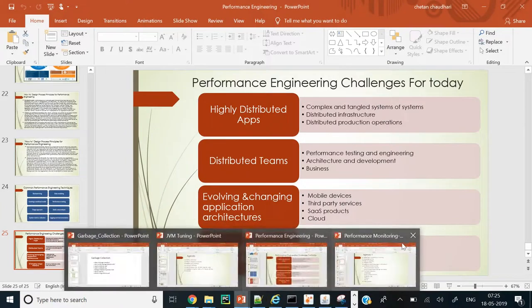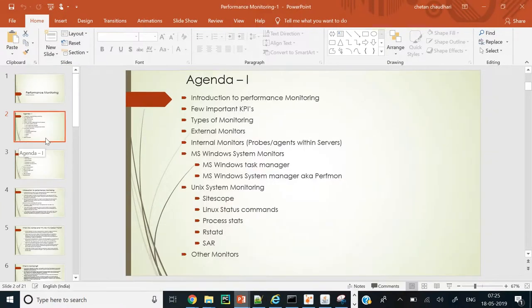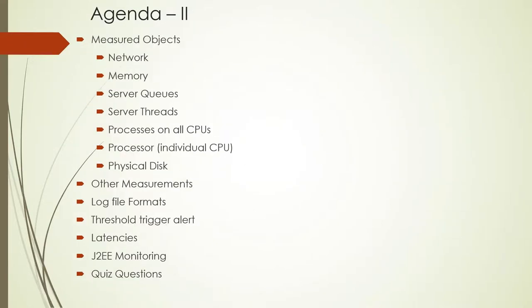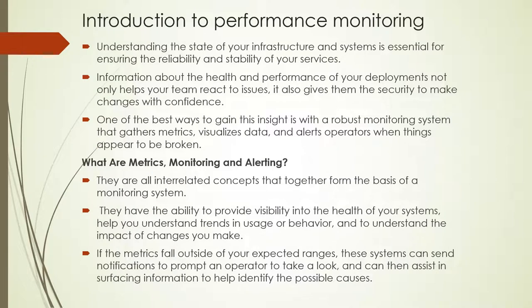The next session was about performance monitoring. We specifically targeted what types of performance monitoring we do and why performance monitoring is required. What is metrics, monitoring, and alerting? Metrics is nothing but the raw data you get. When you visualize it, it becomes information which we can consume. Alerting is required whenever a particular threshold is crossed for a particular metric. We saw the importance of all three.